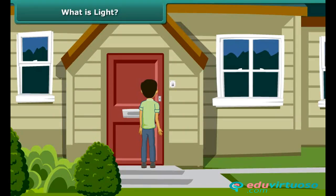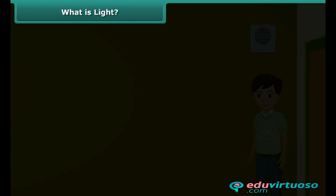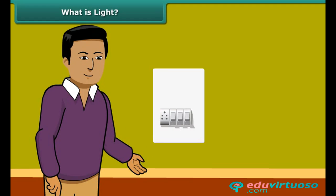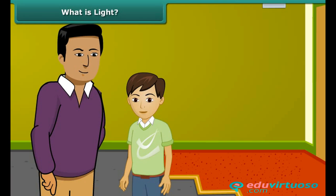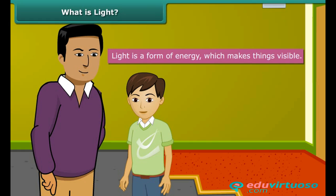It's night and you step inside the house. There is darkness all around; everything appears black and you can hardly see anything. Your father switches the light on and now you can see everything clearly. This means light enables viewing. Therefore, light is defined as a form of energy which makes things visible.